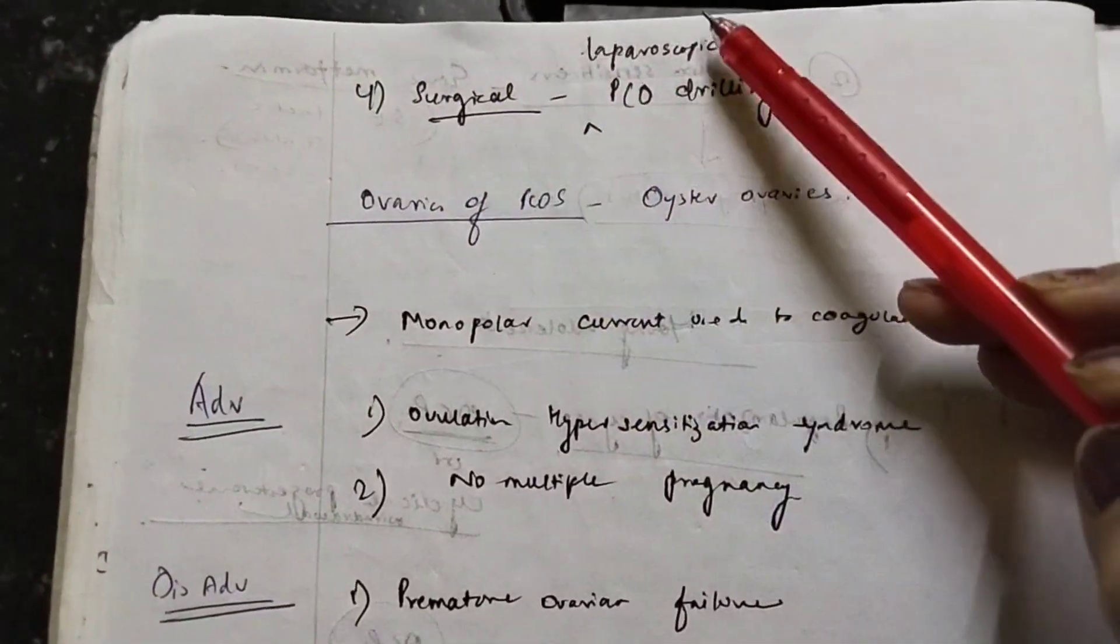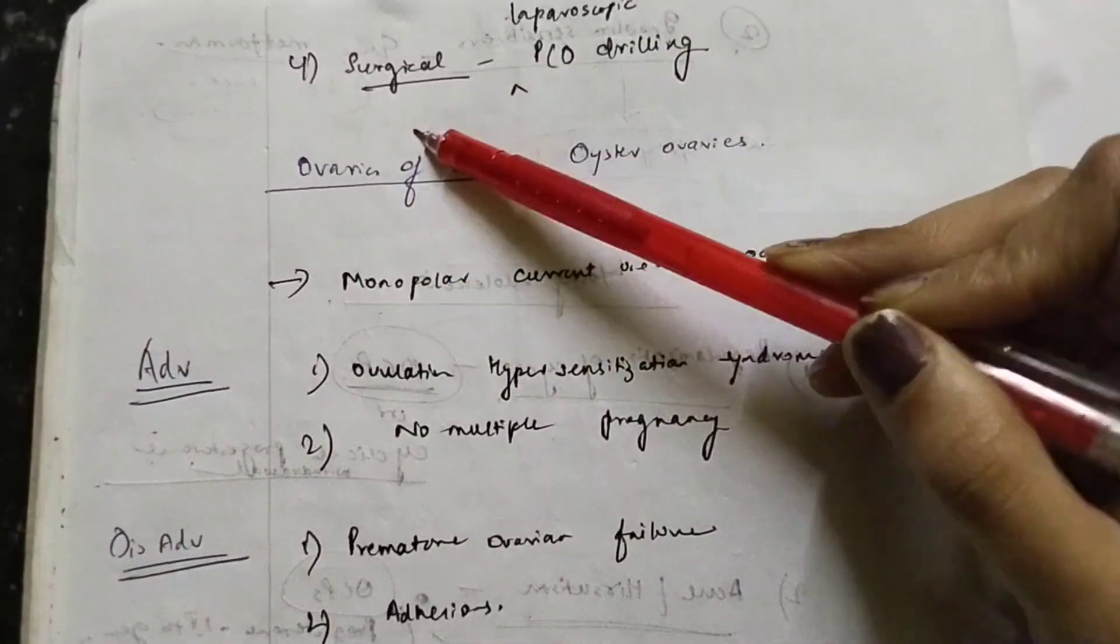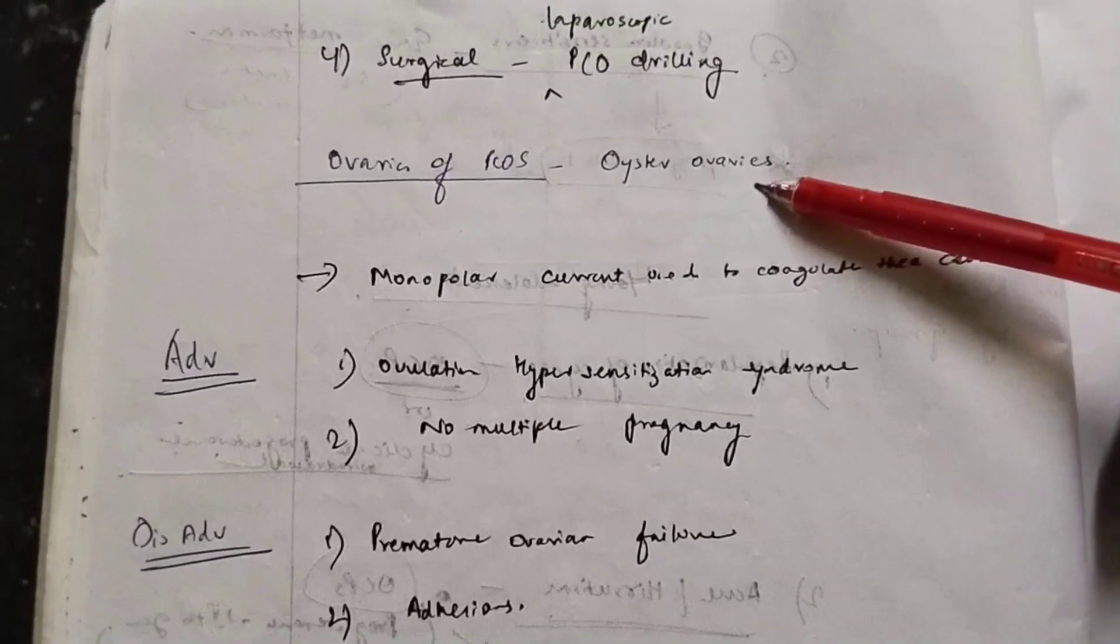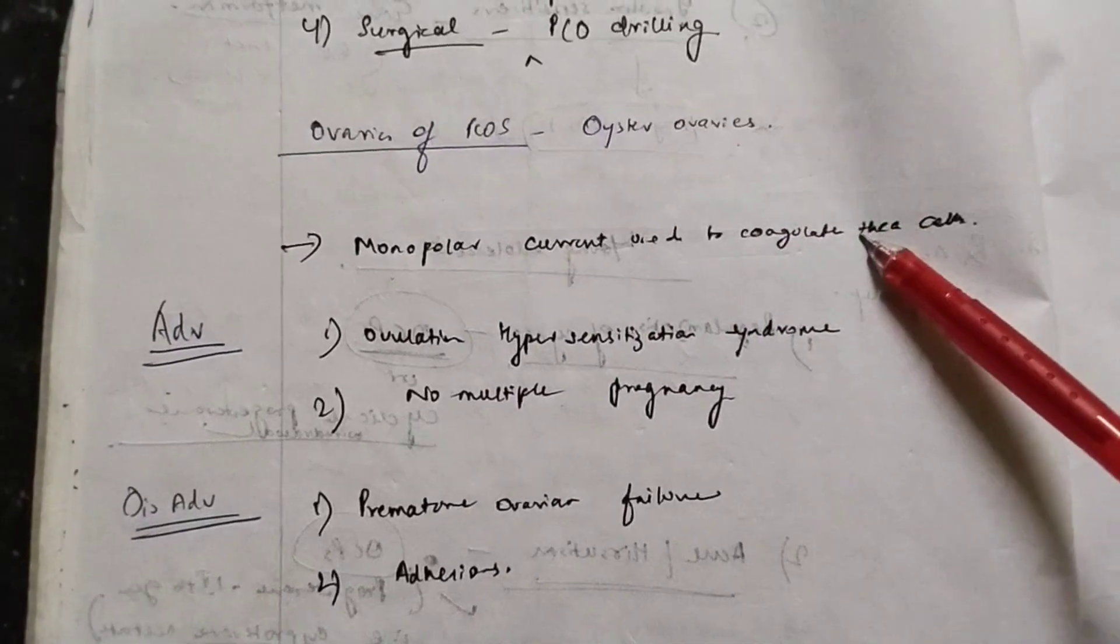Under the surgical option, we can have laparoscopic polycystic ovary drilling. These ovaries of PCOS are called the oyster ovaries, so you must remember that. In surgical procedure, the monopolar current is used to coagulate these theca cells.